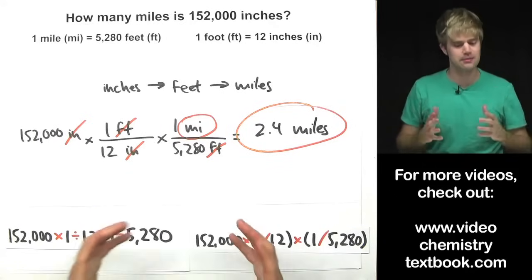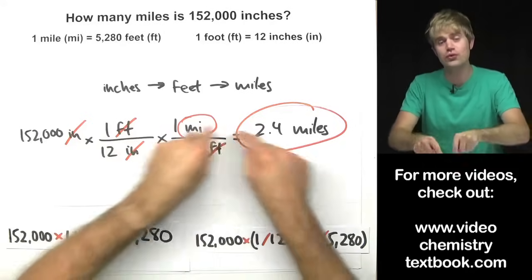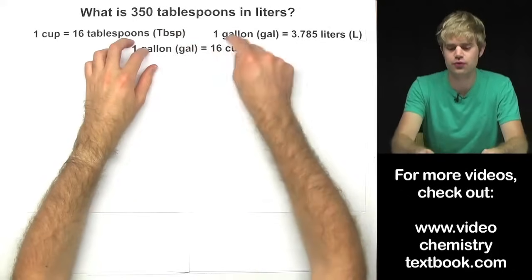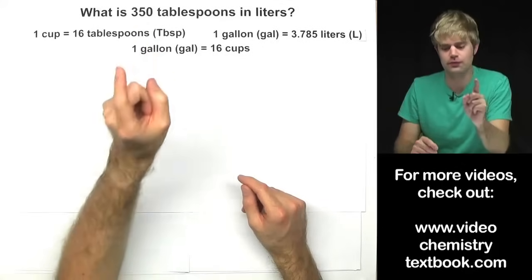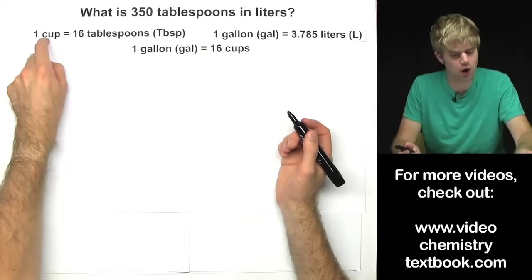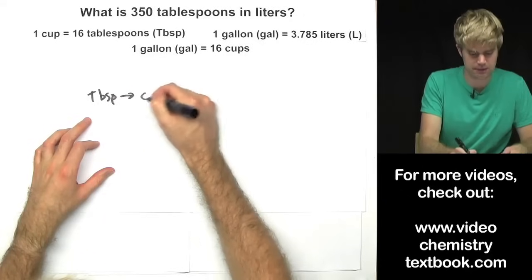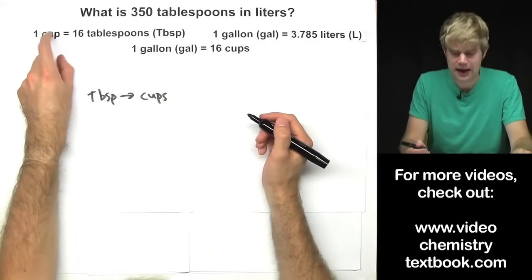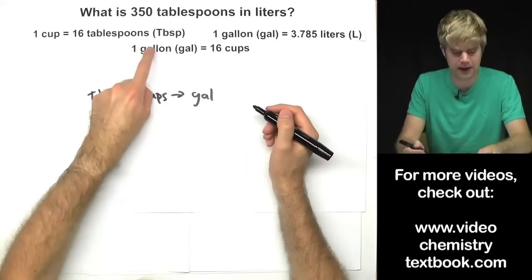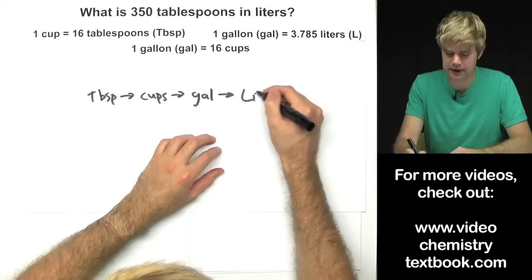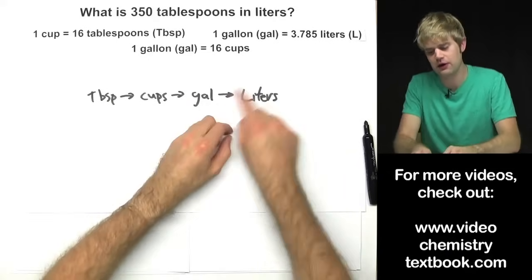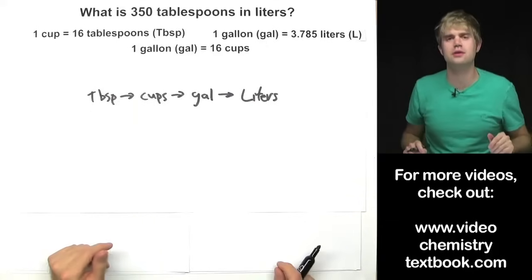We're going to do one more example, and this one is a little trickier because it requires three conversion factors. What is 350 tablespoons in liters? We have three pieces of information to go from tablespoons to liters. Starting with tablespoons, we can go to cups first, then from cups to gallons, and finally from gallons to liters. Those first three units are part of the English system, and the final step takes us into the metric system.